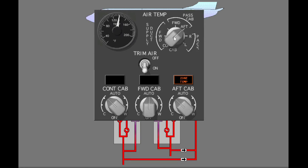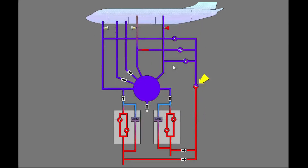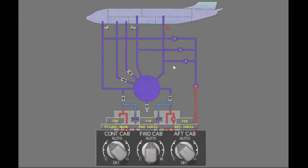If the temperature in the duct increases quickly, select the trim air switch off. When the trim air switch is off, the trim air valve closes and the packs operate independently. The left pack supplies air at the temperature selected by the flight deck temperature control selector, and the right pack supplies air at the average temperature of the forward and aft passenger cabin temperature selectors.